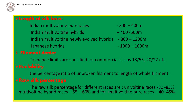Raw Silk Percentage: The percentage of raw silk that can be produced varies among different silkworm races and is taken into consideration when fixing the price of cocoons. The raw silk percentage is 80 to 85% for univoltine races, 55 to 60% for multivoltine hybrid races, and 40 to 45% for multivoltine pure races.